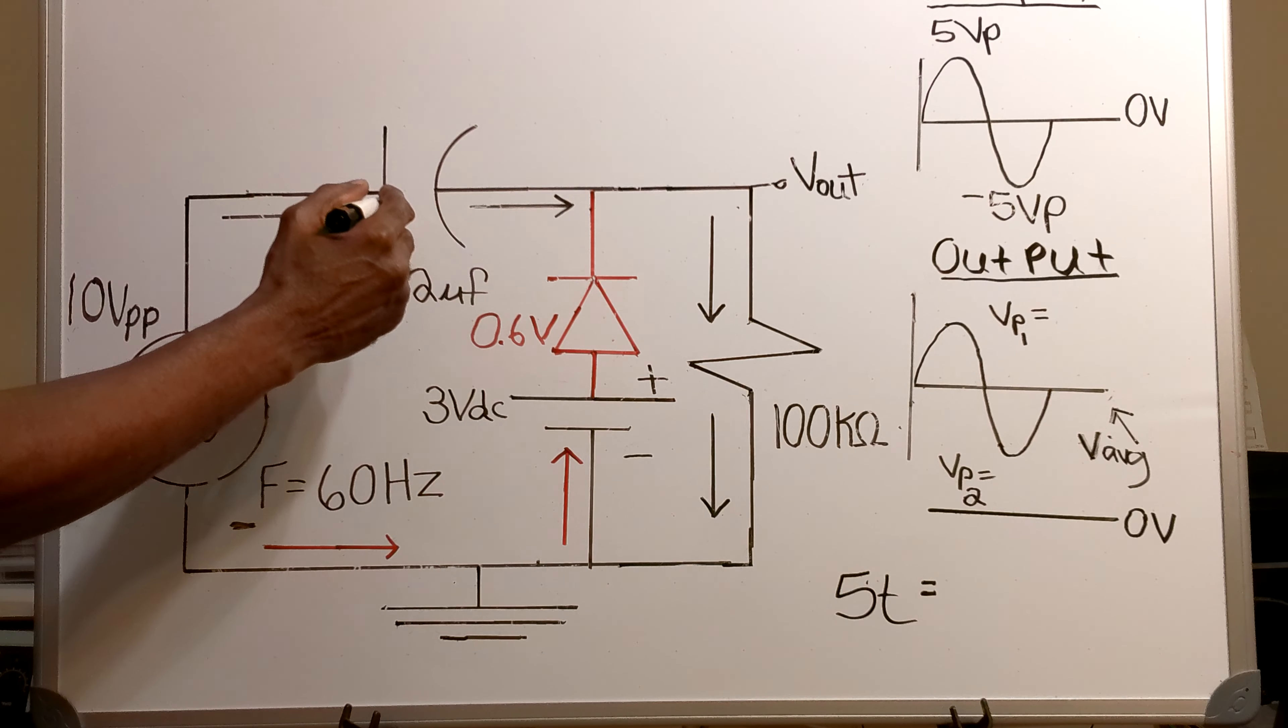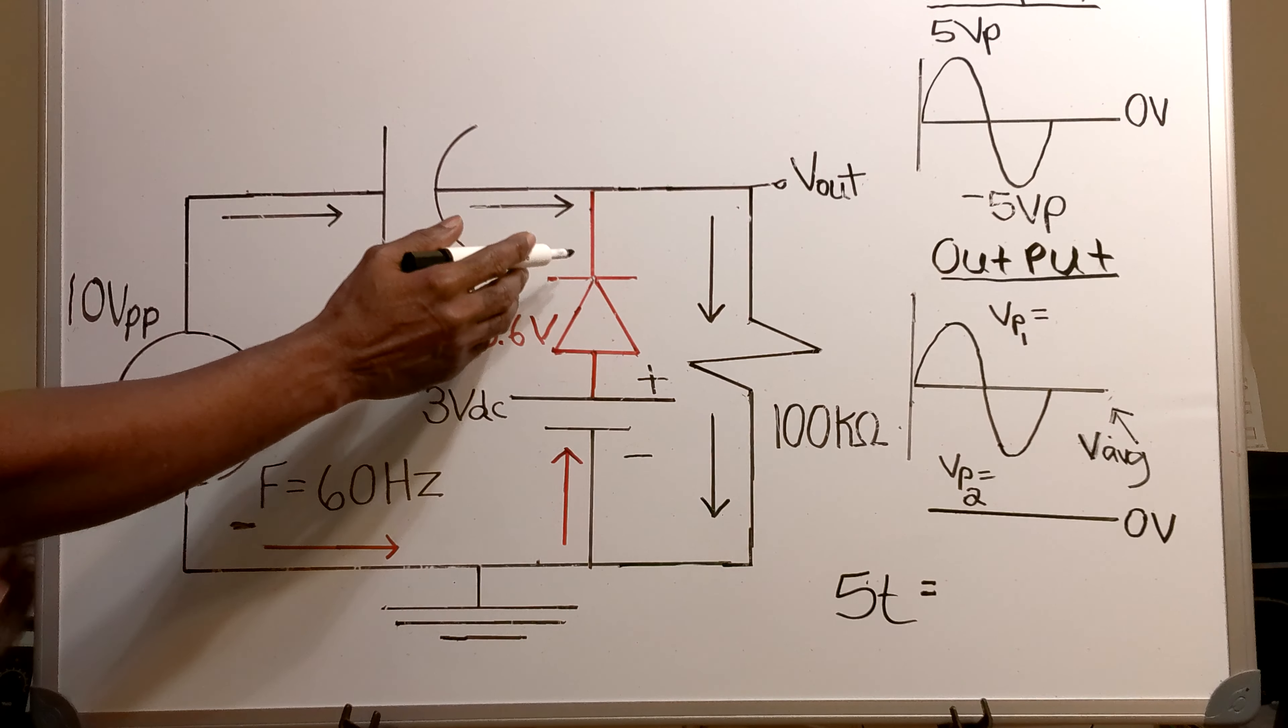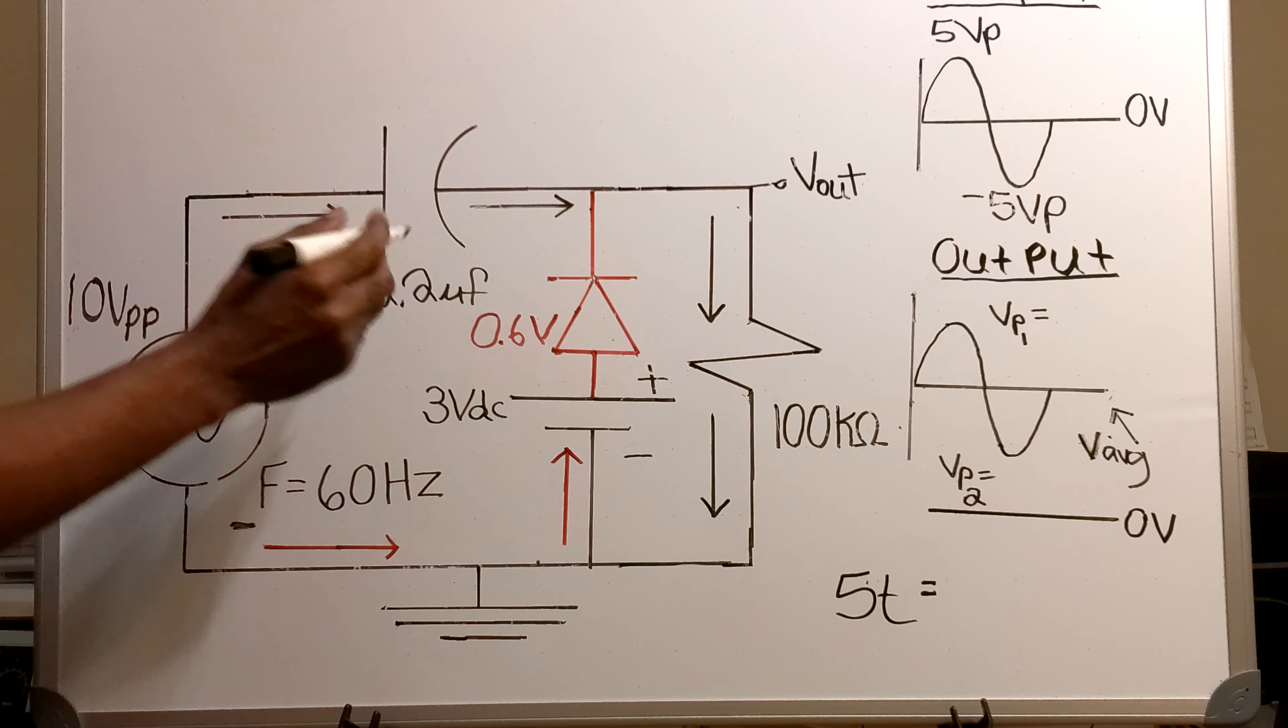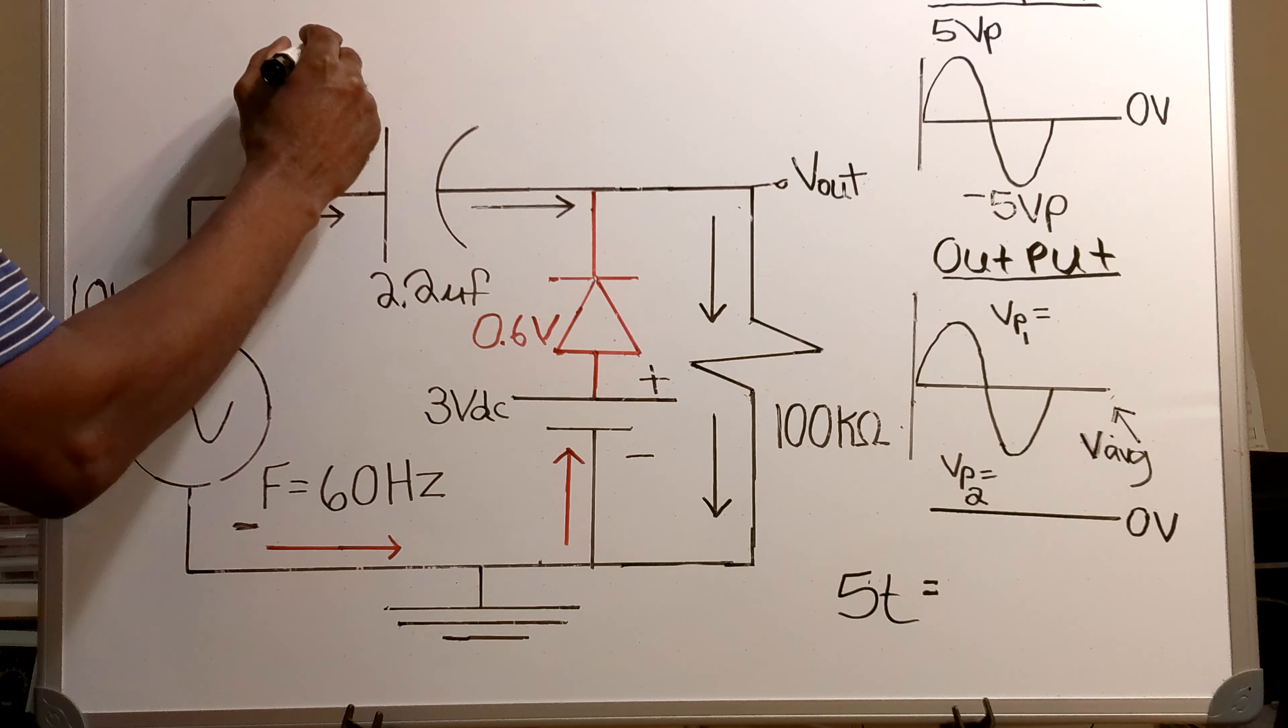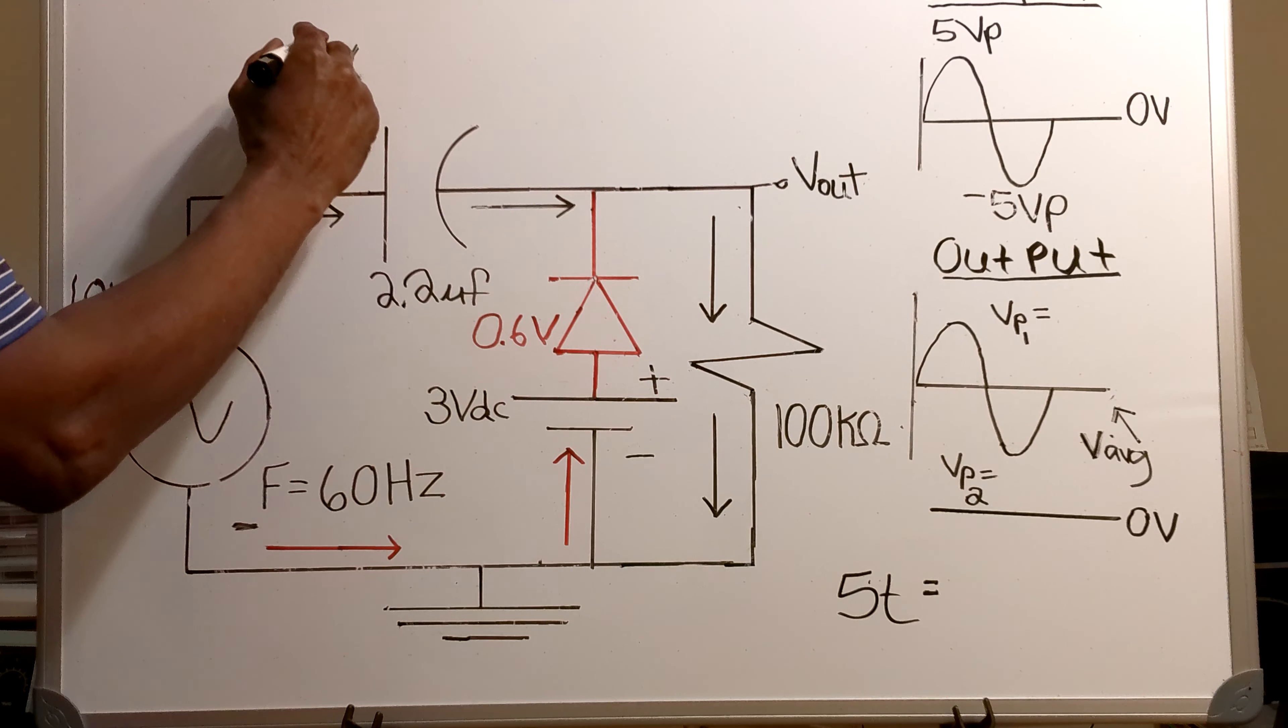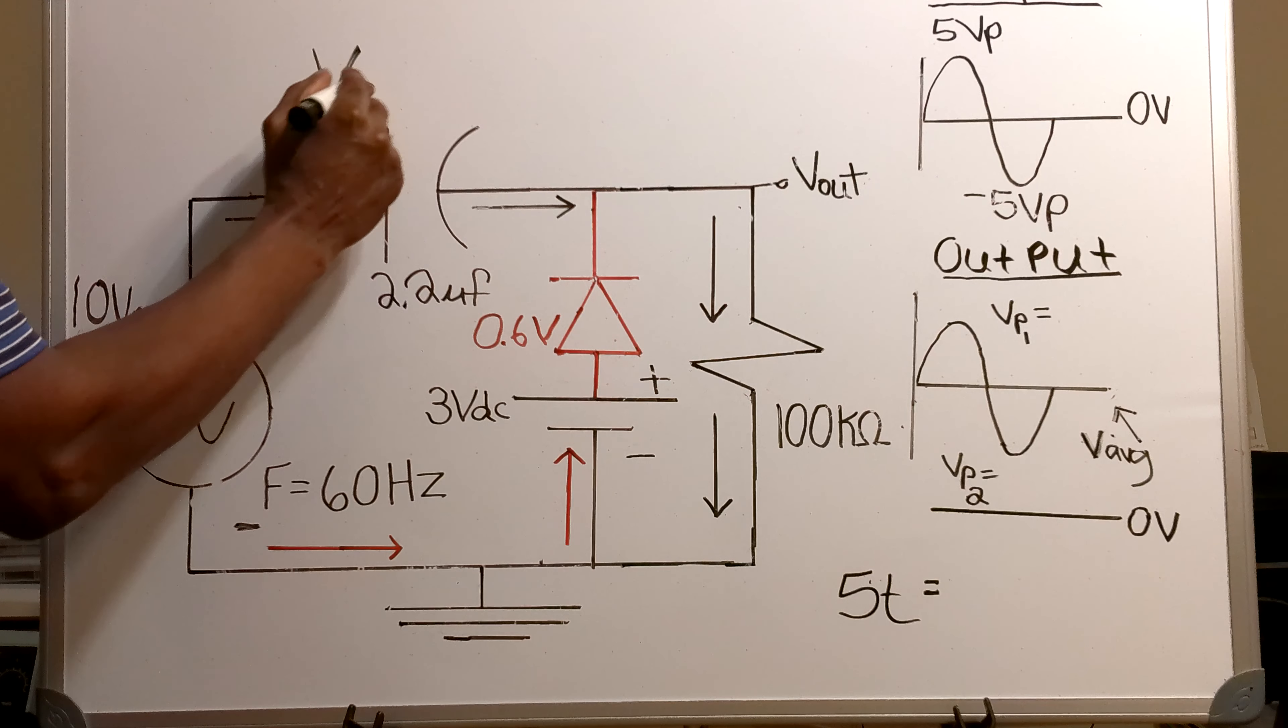Now what's happening here is this. The negative portion of the input is flowing through the diode.